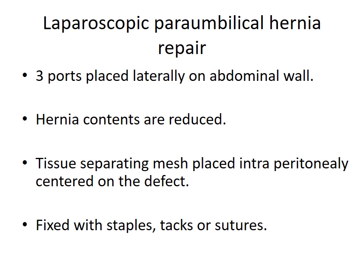For laparoscopic para-umbilical hernia repair: three ports are placed laterally on the abdominal wall. Hernia contents are reduced. A tissue-separating mesh is placed intraperitoneally, centered on the defect, and fixed with staples, tacks, or sutures.